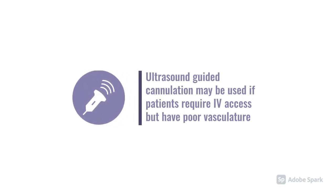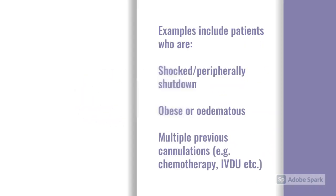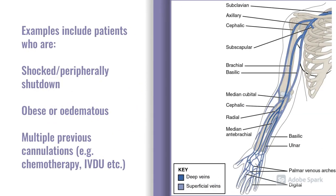Generally, we use ultrasound guided cannulation for patients who require IV access but have very poor vasculature. Commonly these are patients who might be very shocked or peripherally shut down for whatever reason, or obese or edematous patients. The third big group is those who have had multiple previous cannulations — intravenous drug users and chemotherapy patients, for example, who have had repeated cannulations.